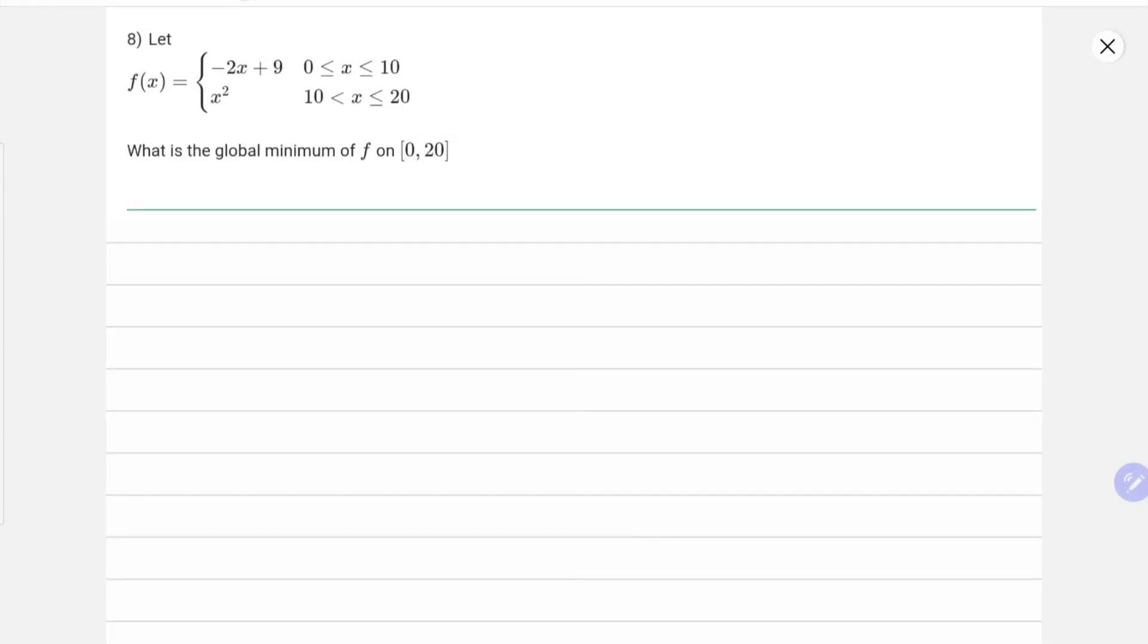In question 8, we are given a piecewise function: f(x) = -2x + 9 for 0 ≤ x ≤ 10 and f(x) = x² for 10 < x ≤ 20. The question asks us to find the global minimum of the function.